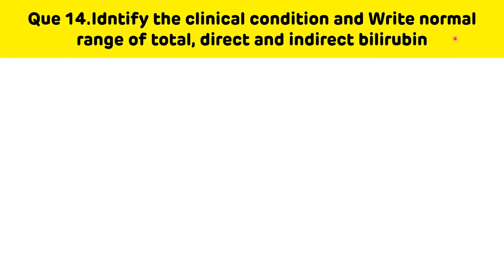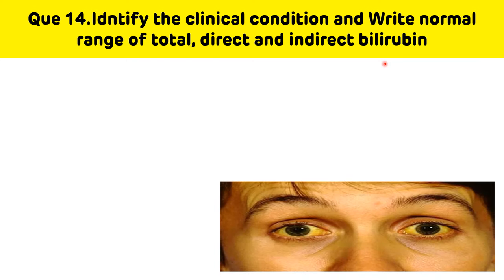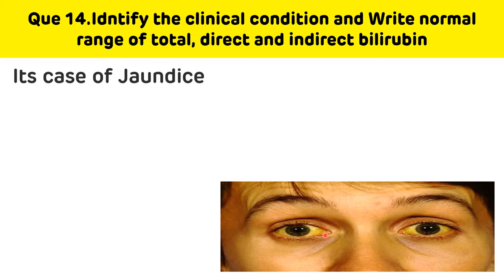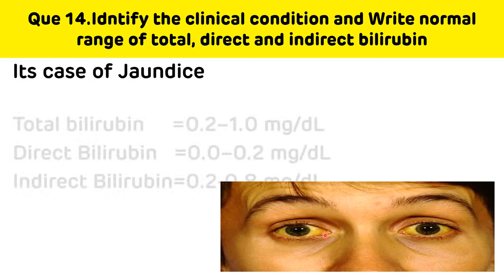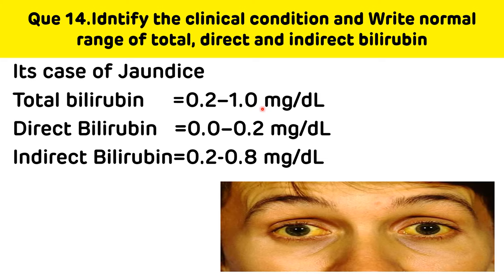Identify the clinical condition and write the normal range of total, direct, and indirect bilirubin. This condition occurs due to the accumulation of bilirubin — there is yellow discoloration of skin and sclera. If there is yellow discoloration of the sclera, it is also called icterus. This is jaundice. The normal value of total bilirubin is 0.2 to 1.0 mg/dL, direct bilirubin is 0 to 0.2 mg/dL, and indirect bilirubin is 0.2 to 0.8 mg/dL.